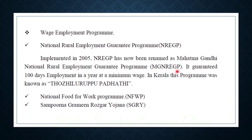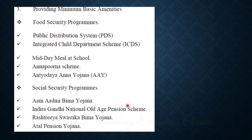The second approach is providing minimum basic amenities. That includes food security programs and social security programs.